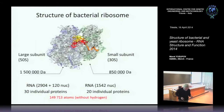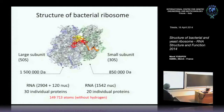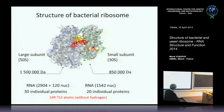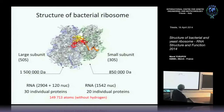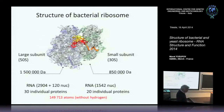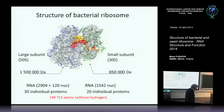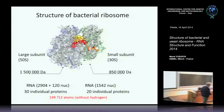Just to remind you: the bacterial ribosome has two subunits — a small subunit and a large subunit. The RNA shown in gray forms the significant part of the ribosome structure: about three thousand nucleotides in the large subunit and half that in the small subunit, together with about 50 proteins. In total, we determined approximately 150,000 atoms per ribosome.